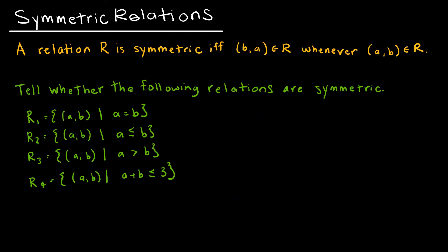The next property is the symmetric property. A relation is symmetric if and only if (B, A) belongs to R whenever (A, B) belongs to R — if (A, B) belongs to R, then (B, A) must belong to R. Looking at R1: if (2, 2) belongs to R1, then switching the order it also belongs to R1. So yes, R1 is symmetric.